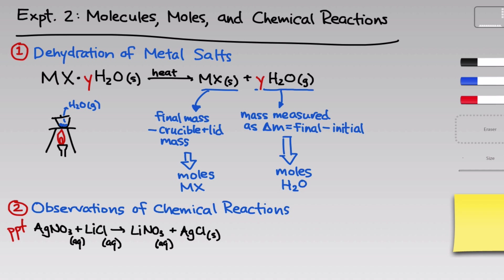For example, silver nitrate, AgNO3, reacts with an aqueous solution of lithium chloride, LiCl, to form aqueous lithium nitrate. In other words, the lithium cation and nitrate anion remain in solution, and solid silver chloride. The silver chloride precipitates out of solution, and we see this solid forming at the bottom of the reaction vessel. That's one type of reaction we'll explore.